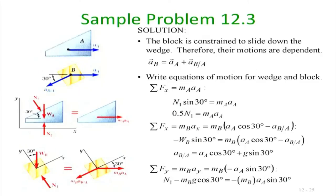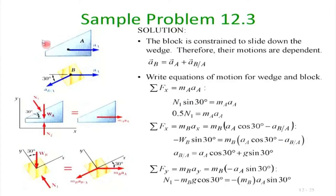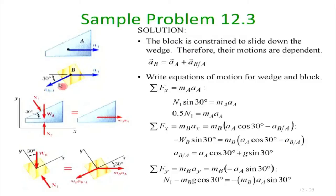We write down the equations of motion for the wedge and block. The kinetic diagram for the wedge shows acceleration only in the x-direction. For block B, it has one acceleration component equal to that of A, plus an additional acceleration of B relative to A along the slope. This uses concepts of relative acceleration from kinematics.